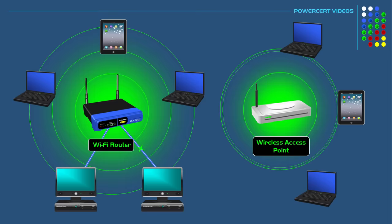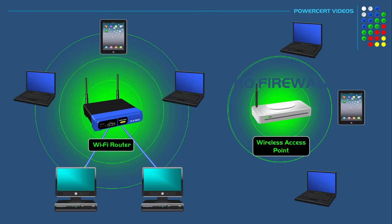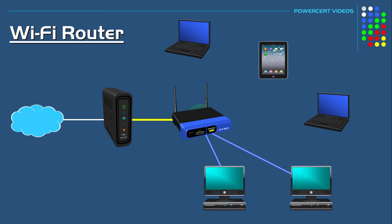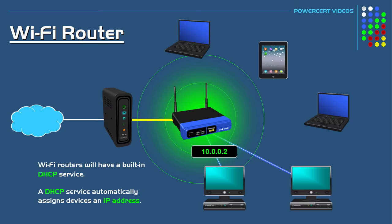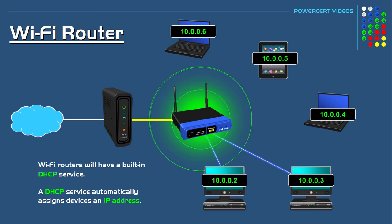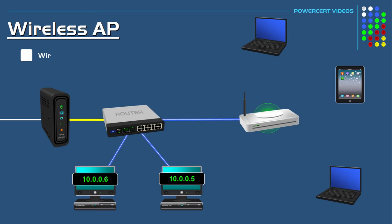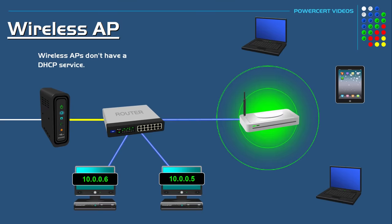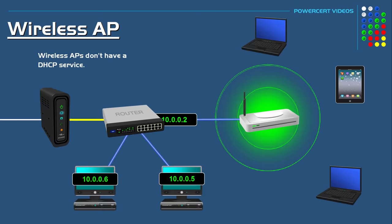Another difference is a firewall. Wireless access points don't have a firewall, while wi-fi routers will have a firewall. Wi-fi routers will also have a built-in DHCP service, which automatically assigns IP addresses to devices that are connected to it. So when devices connect to a wi-fi router, its built-in DHCP service will directly assign those devices an IP address. But since wireless APs don't have a DHCP service, the devices connected to it will get their IP address from the organization's router. Once a device connects to the wireless AP, the router will send the IP through the wireless access point and then to the device.